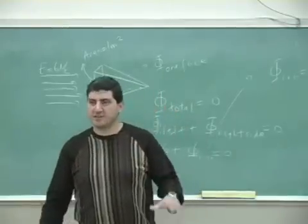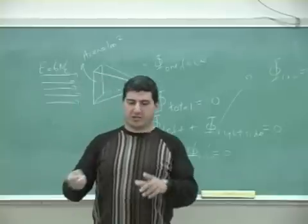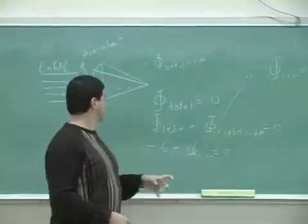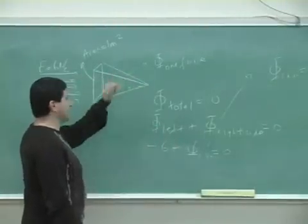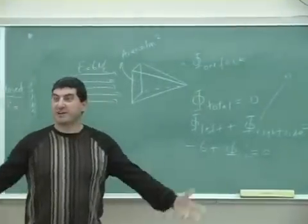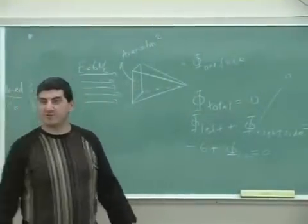But the easy way of doing it is just to use symmetry and say, well, if they're equivalent faces, how many faces do you have? One, two, three, and then the back there, four. So divide six by four. Without having to do an integral, I know the flux through one face.